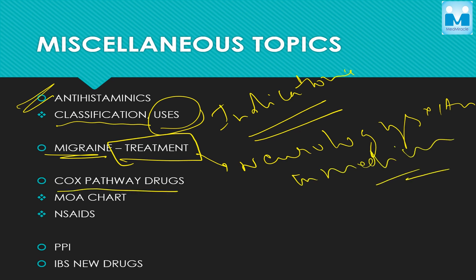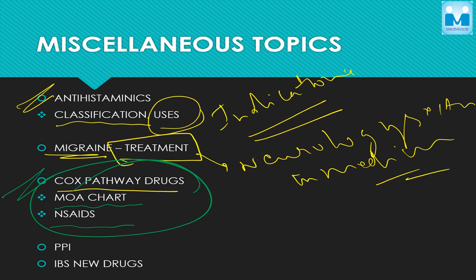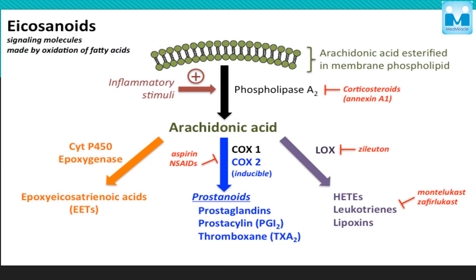The COX pathway drugs are also a hot topic — the mechanism of action and NSAIDs — you have to be thorough with this topic and also with the pathway image coming in the next slide. Then there are steroids — zileuton, montelukast, zafirlukast — acting at various points in the pathway. You have to know this pathway. Some other topics are there, but just read them and have a general idea.